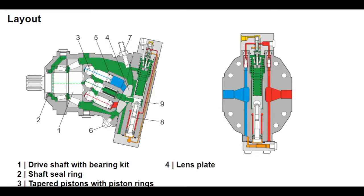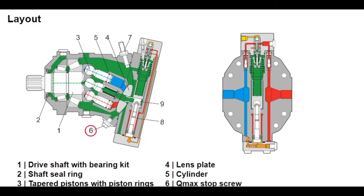Due to the bent axis design, torque is produced directly on the driveshaft. The pistons exert minimal lateral force on the cylinder, which reduces wear, increases efficiency, and improves starting torque. The maximum swivel angle, and thereby the maximum output torque, can be limited with a Q-max stop screw (6). The minimum swivel angle, and thereby the maximum output speed, can be set by the Q-min stop screw (7).